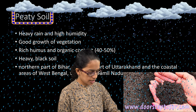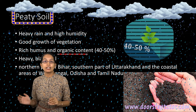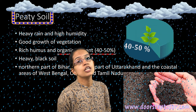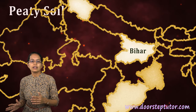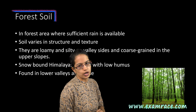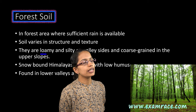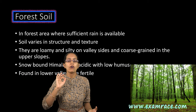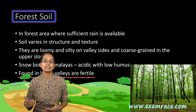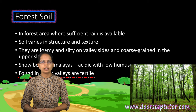Peaty soil is found in regions with very heavy rainfall and high humidity conditions, with good growth of vegetation. Organic content is very high — up to 50%. It is usually a dark-colored, black soil, mainly found in Uttarakhand, northern parts of Bihar, West Bengal, Odisha, and Tamil Nadu. Forest soil is found in areas with good rainfall, as the name suggests. Its structure and texture are important; it is usually loamy in nature. In the Himalayas it has less humus and acidic pH, while in lower valley areas it is considered very fertile soil.